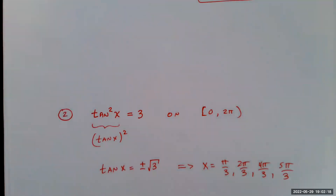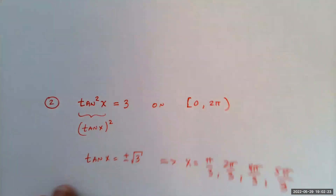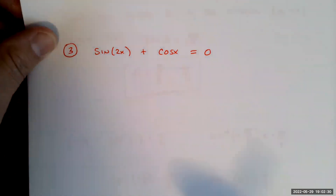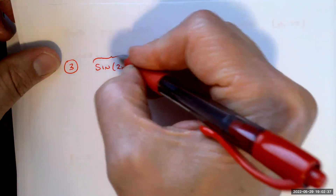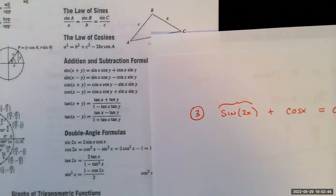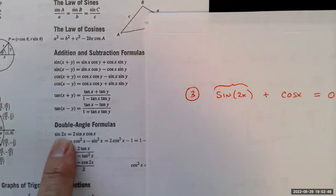Here's one more advanced example on the same interval. With two trig functions, this should ring a bell — the double angle formula for sine. Sine of 2x is not 2 times sine of x; you can't just pull the 2 out. But sine of 2x equals 2sin(x)cos(x).